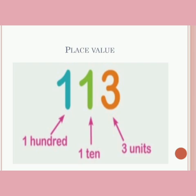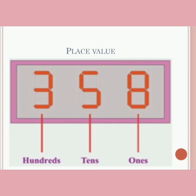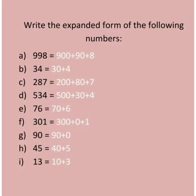In the number 358, 8 is in the unit's place, 5 in the 10's place, and 3 in the 100's place. Now let's solve the given exercise: write the expanded form of the following numbers. 998 is equal to 900 plus 90 plus 8.